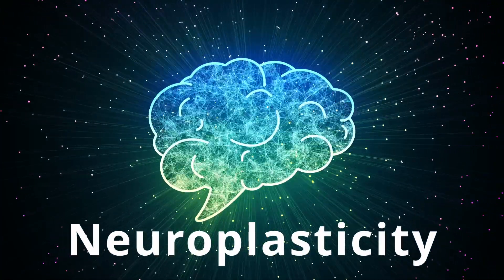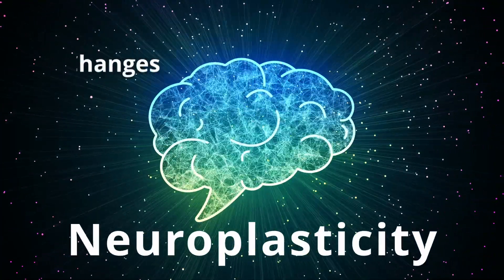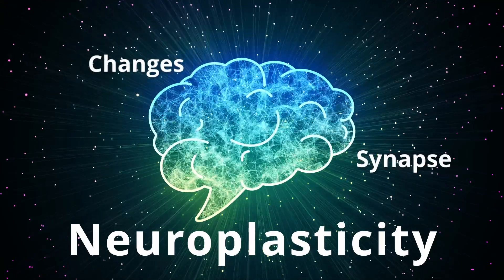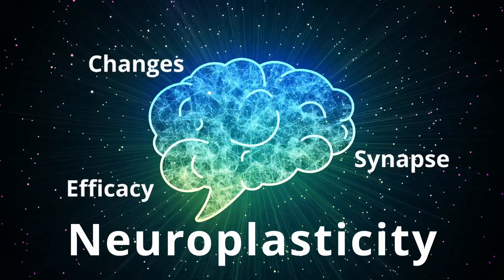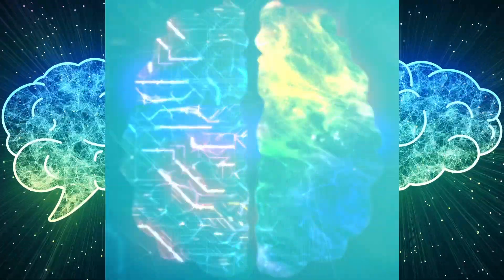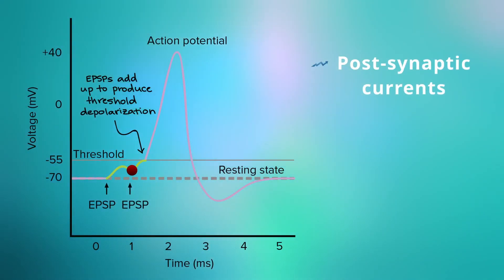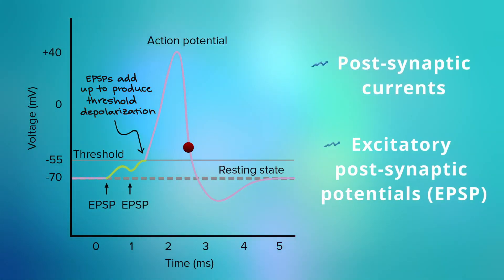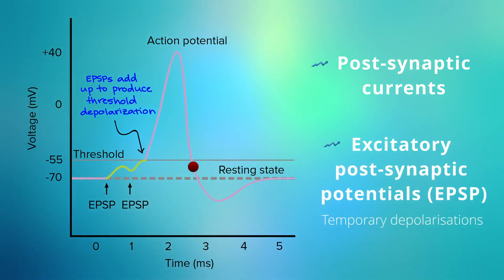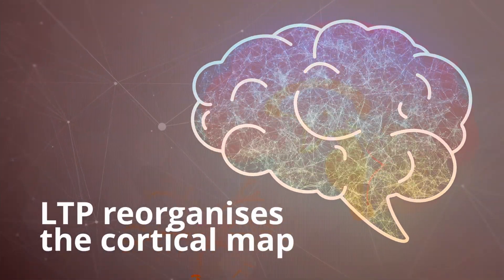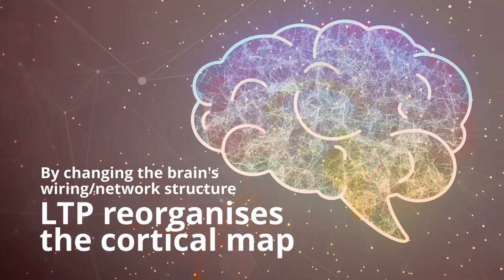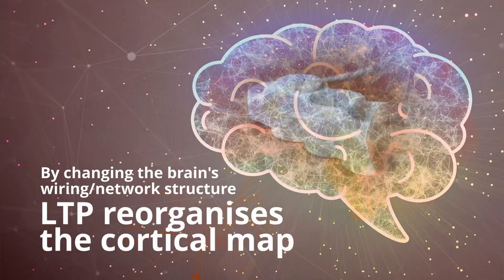The resultant functional alterations lead to changes in synapse efficacy. This is measured by increased post-synaptic currents and excitatory post-synaptic potentials (EPSP), which are temporary depolarizations. Over time, this reorganizes the cortical map by changing the brain's wiring or network structure.